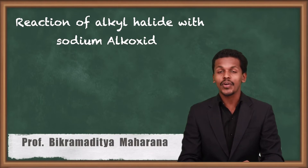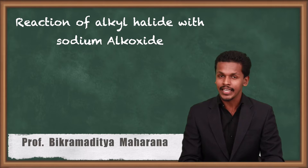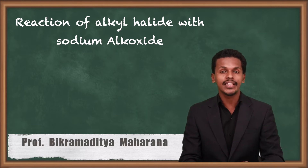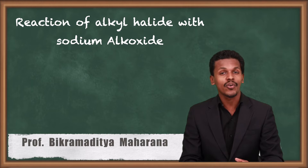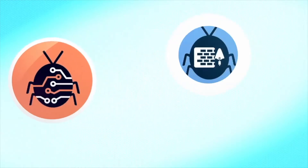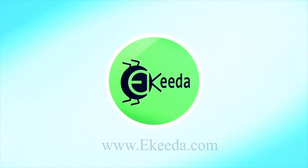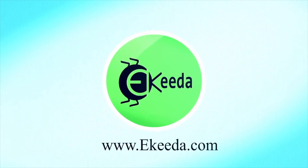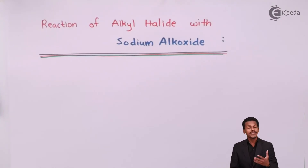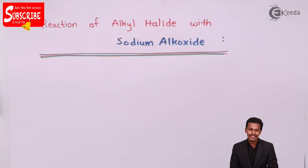Hello friends. In the previous lecture we got to know about how the reaction takes place between ammonia along with that of the alkyl halide. And now we are going to talk about the reaction between the alkyl halide along with that of sodium alkoxide. So basically an alkyl halide is treated with sodium alkoxide so as to obtain ether, and this kind of synthesis of ether is basically known as Williamson synthesis of ether.